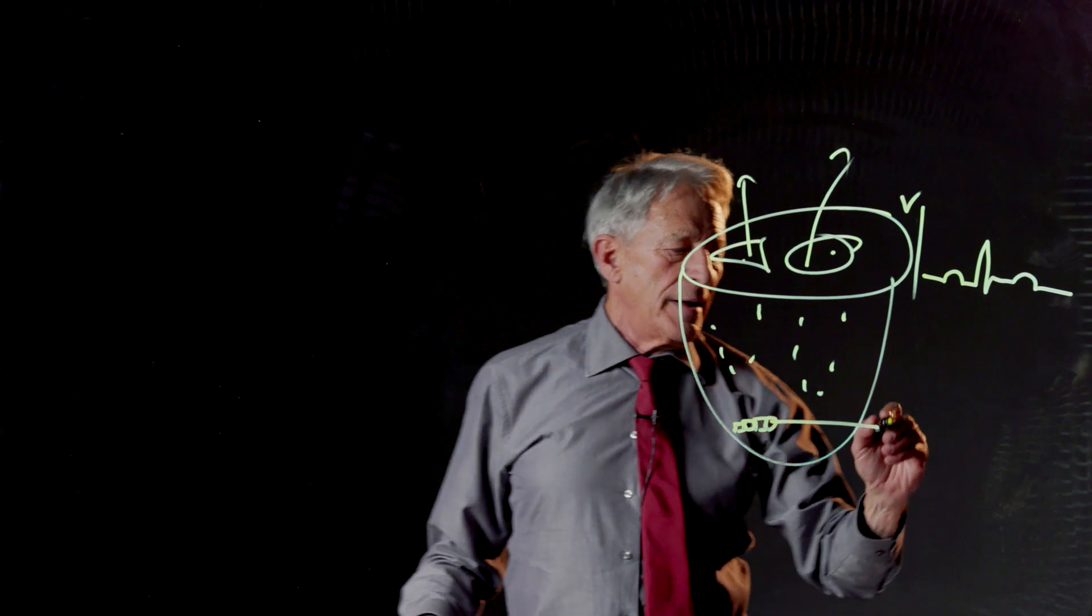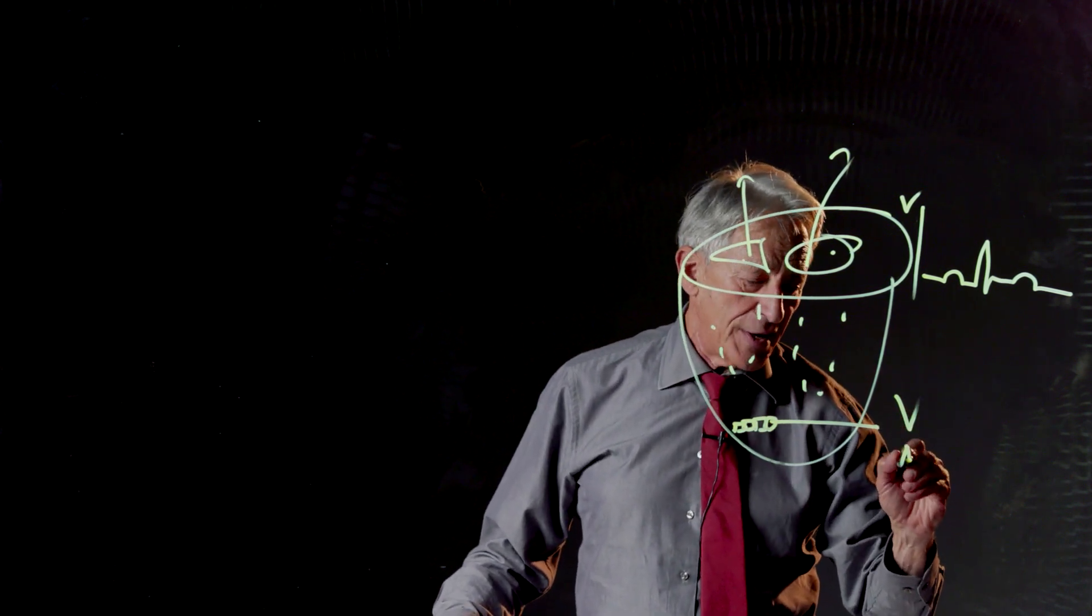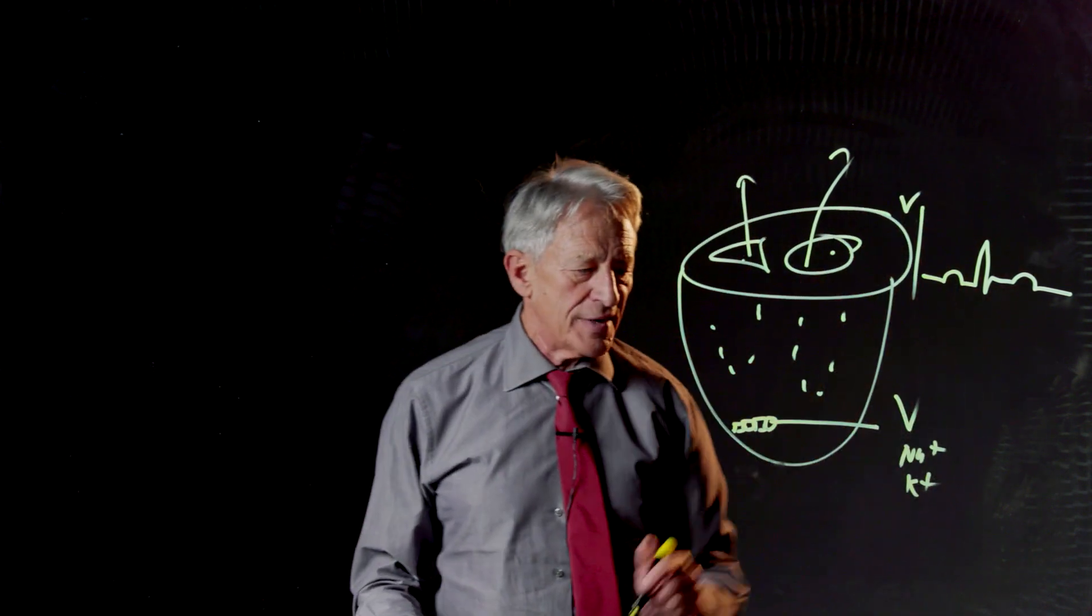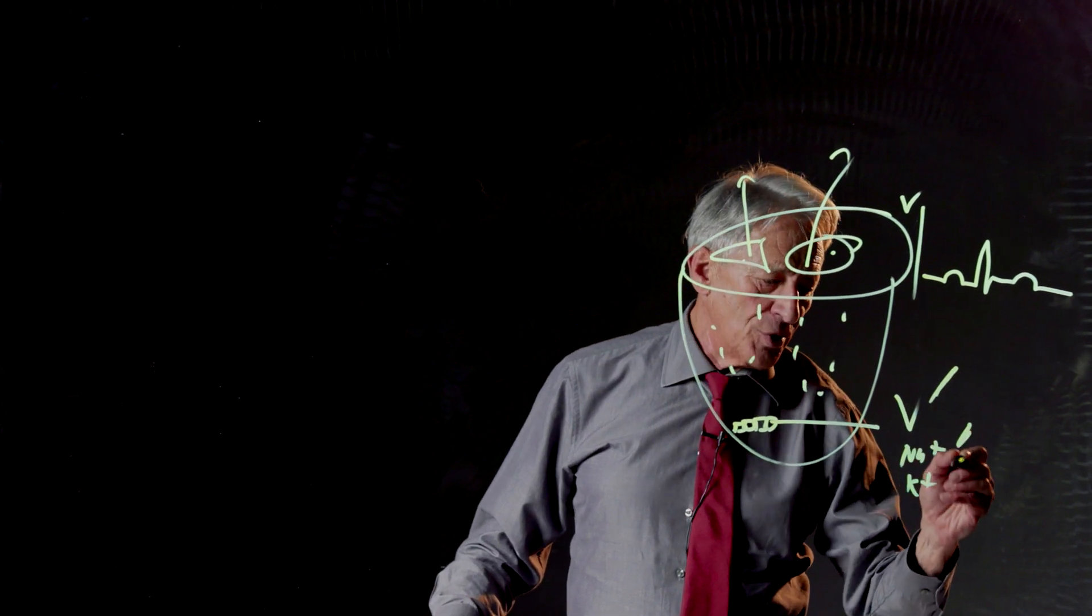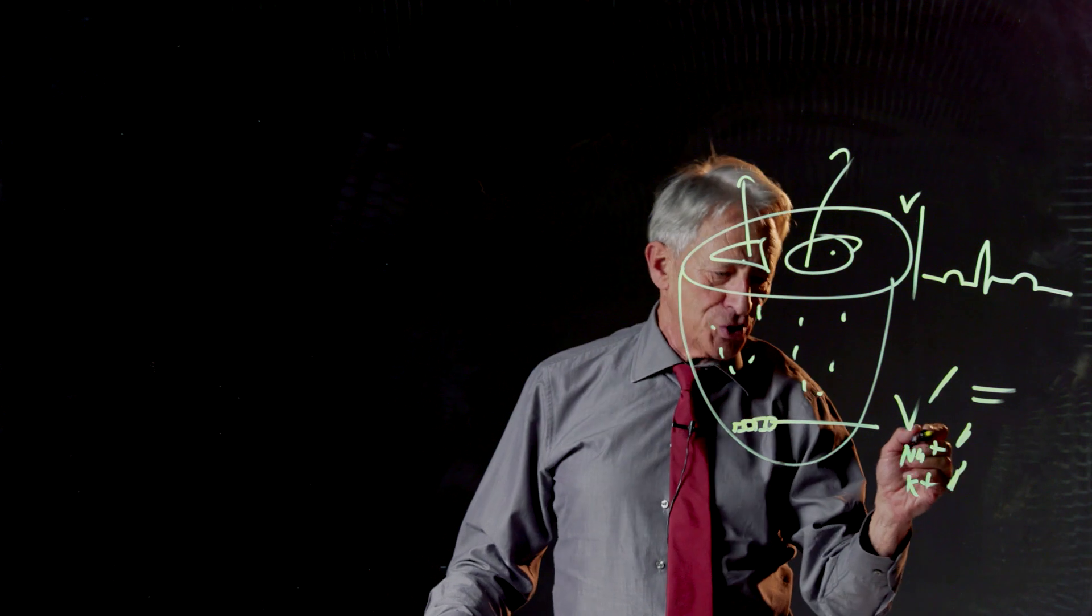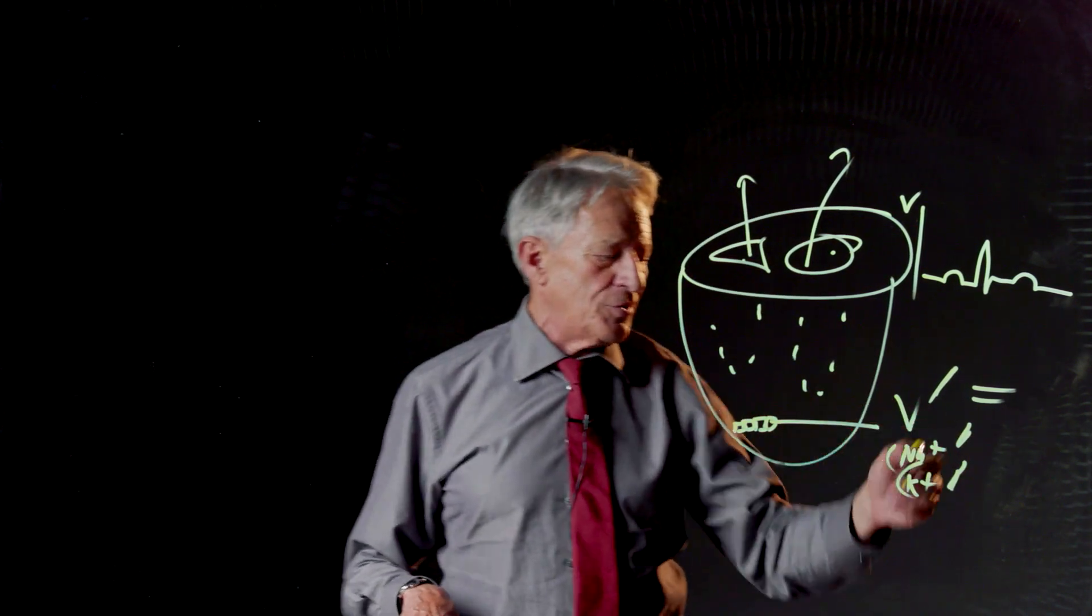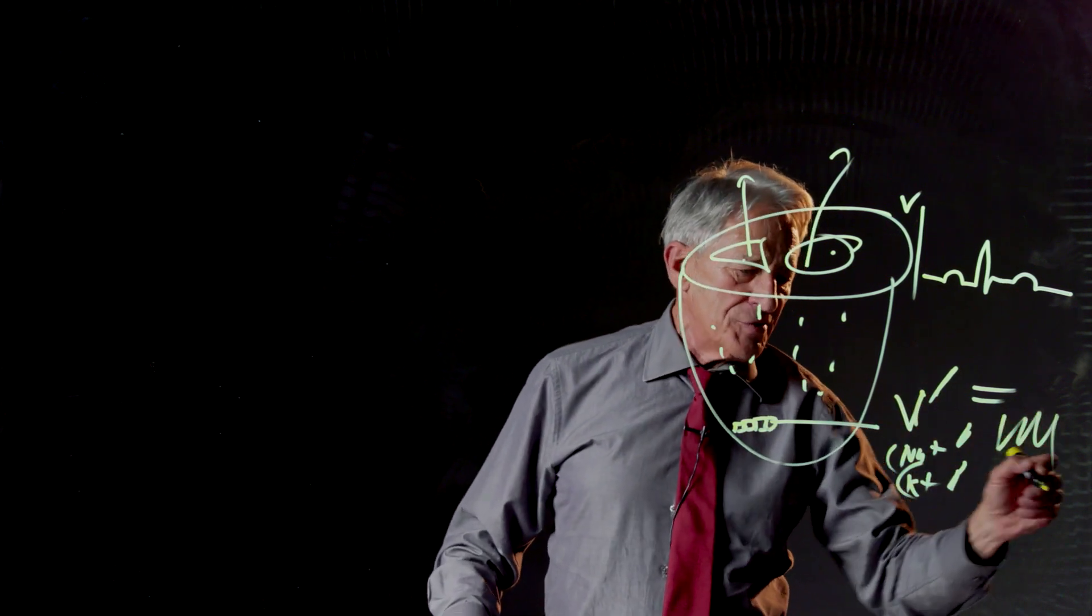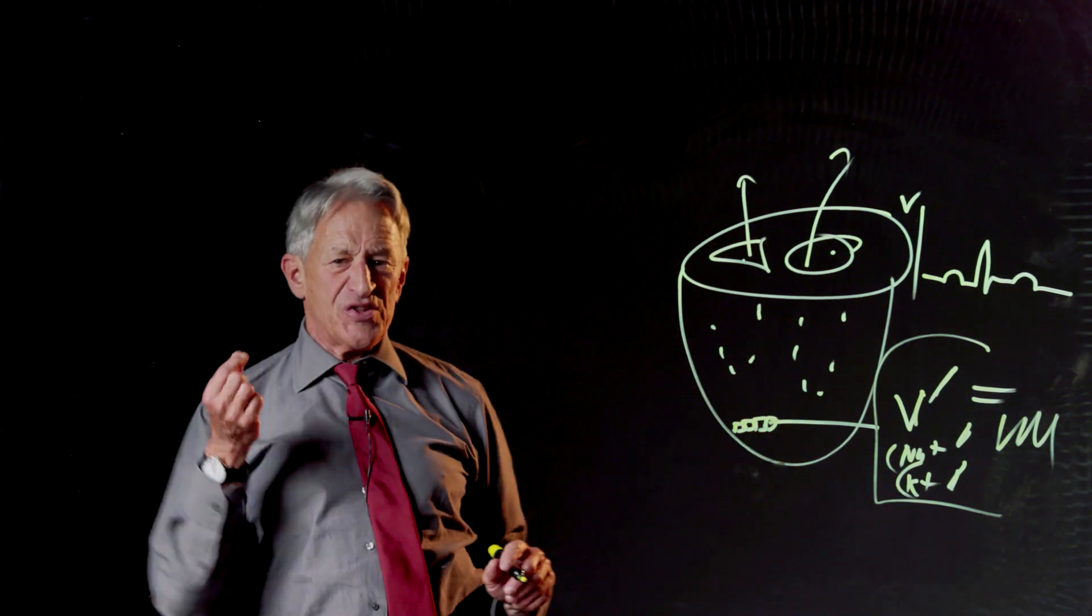Each cell has a voltage, and it has currents, and it has sodium ions, and it has potassium ions, and all of that stuff. And there's a big differential equation that says that the change of voltage is a function of sodium and potassium, and the calculations of sodium and potassium are in turn functions of voltage. And there's just a big differential equation that governs each cell.